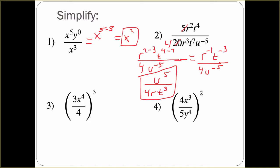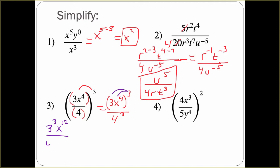For the next one, I'm going to bring this power into the whole numerator and distribute it through, and also bring it to the denominator. So we have 3x to the fourth, all cubed over 4 cubed. Then we bring that power of 3 into both pieces of the top: 3 cubed and x to the fourth cubed, which multiplies the exponents to give x to the 12th. And we have 4 cubed in the denominator. 3 cubed is 27, x to the 12th stays the same, and 4 cubed is 64. This is the simplified form.